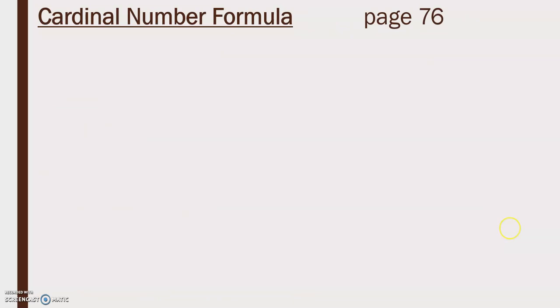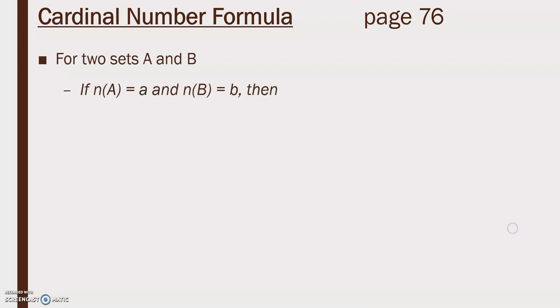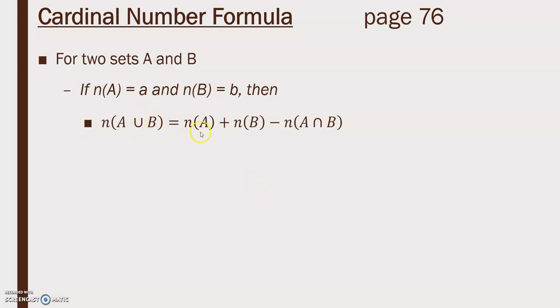We'll finish up with the cardinal number formula. When finding the cardinality of a set, we are finding the number of elements in a set. For two sets A and B, n(A union B) equals n(A) plus n(B) minus n(A intersect B). We need to subtract the intersection values because they are being counted twice.